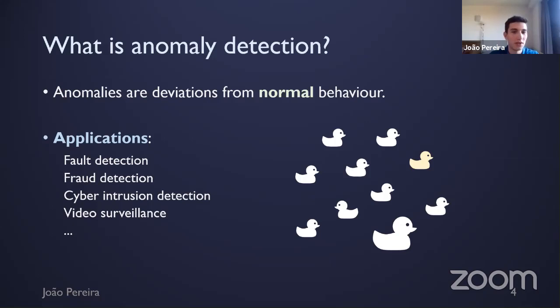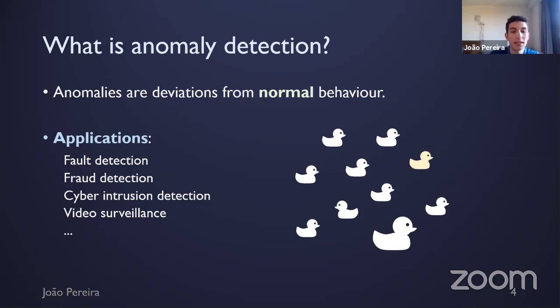Anomaly detection is about finding observations in data that do not follow the normal or expected behavior — typically the predominant or typical pattern of the data. Here you see some ducks that illustrate that whenever we solve an anomaly detection task, the first thing we need to define is what is an anomaly in our application. Maybe it's the duck with a different color, different size, or the one looking backwards. The definition of anomaly is very much dependent on context and use case.